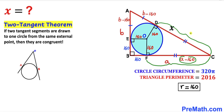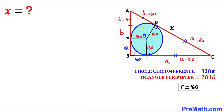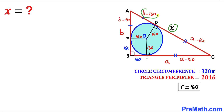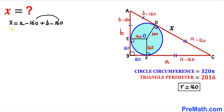Now let's make an observation. The whole side length AC is x, which is made up of AD plus DC. AD is b minus 160 and DC is a minus 160, so x equals (a minus 160) plus (b minus 160), which simplifies to x equals a plus b minus 320. Let's call this equation number one.